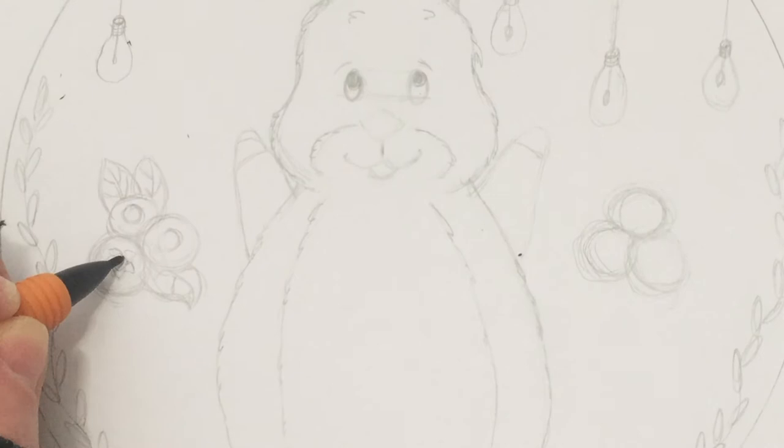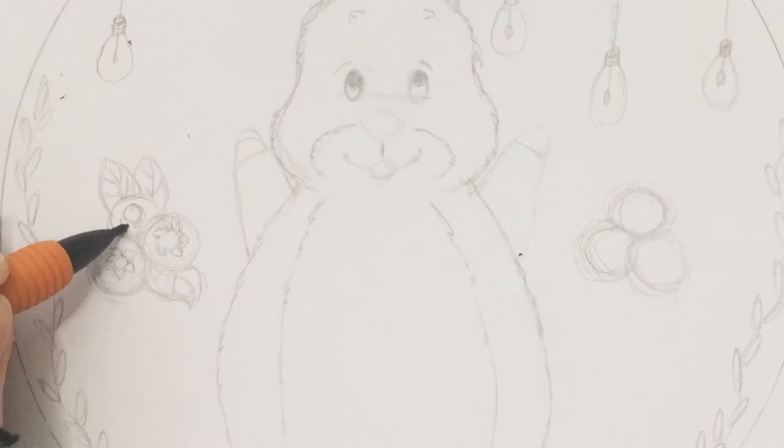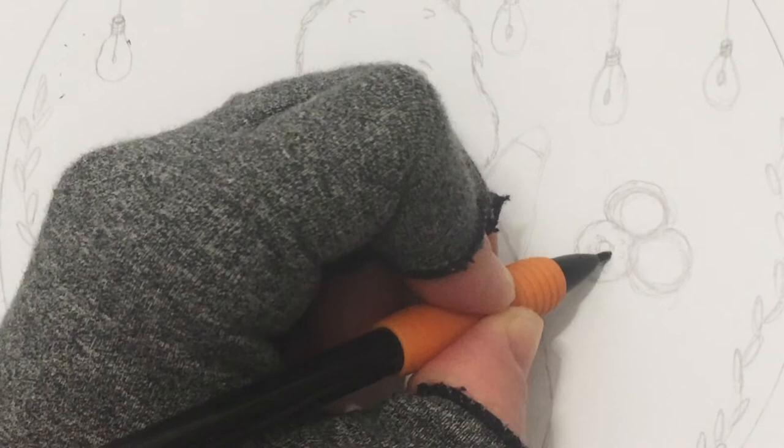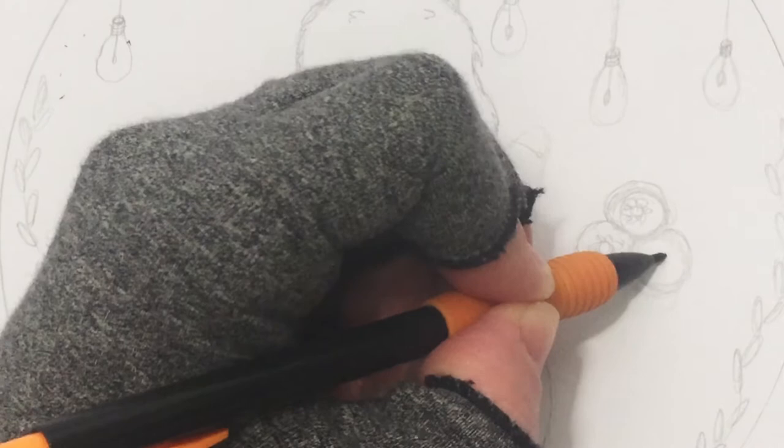I drew the berries freehand because the berries aren't perfectly round, but I'm showing you this Artist's Loft guide in case you decide to use it to make the circles of the berries. Let's continue to draw a few leaves on the right side stack of berries.